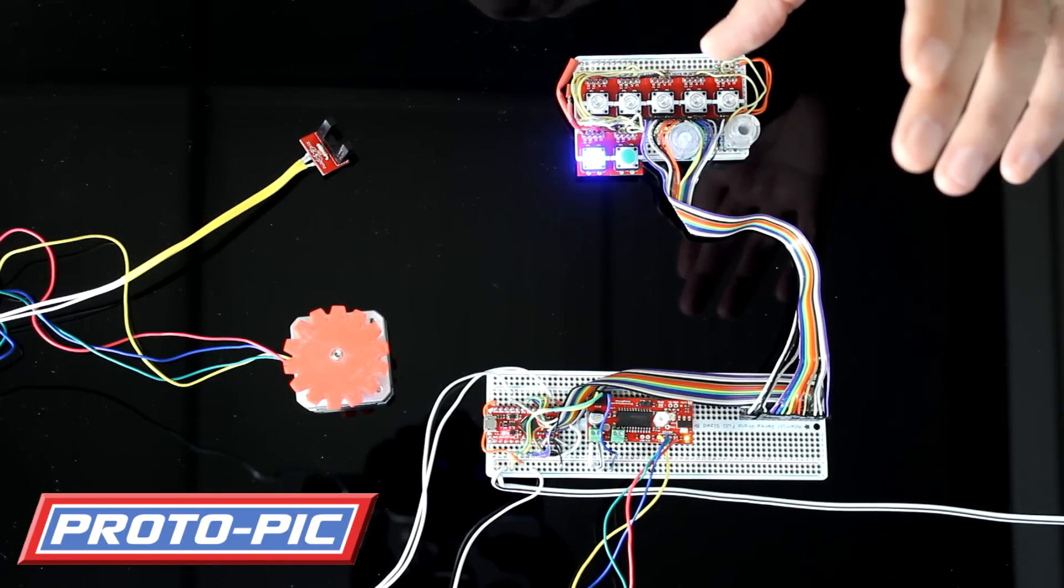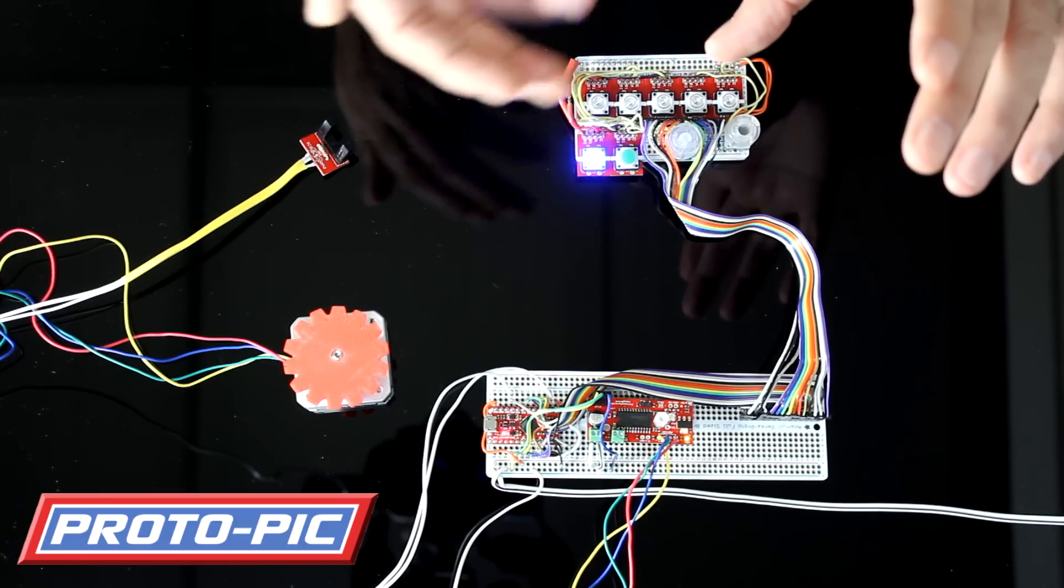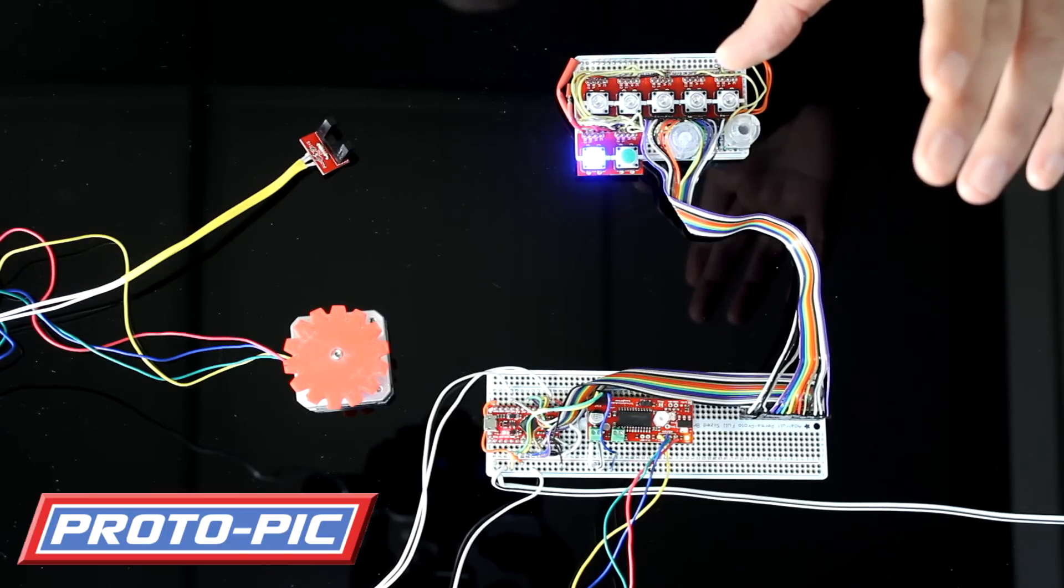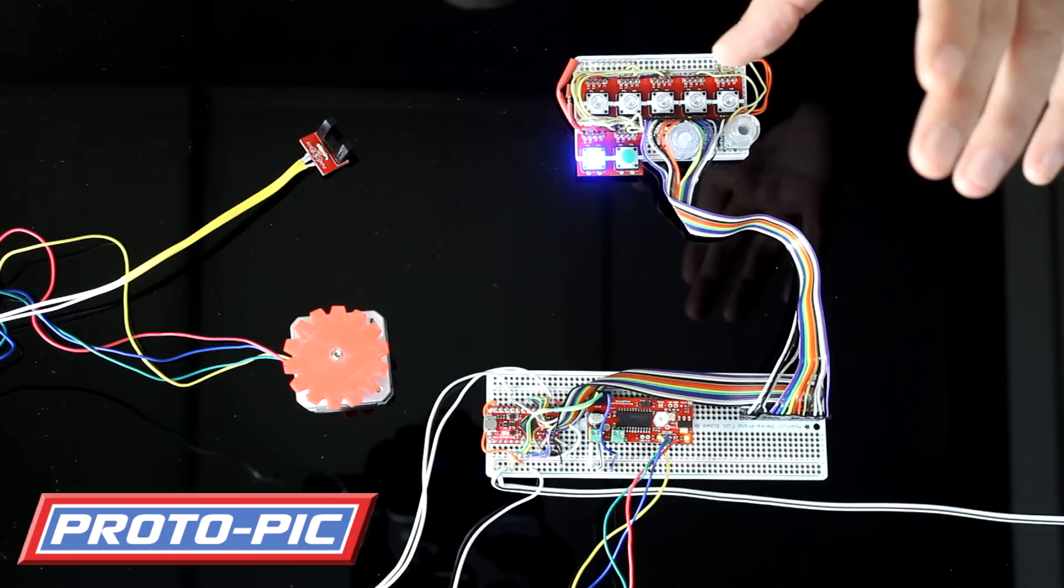So what you do is you read the analog input, you grab the value and you check it against the button values that you've set for these things.